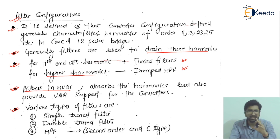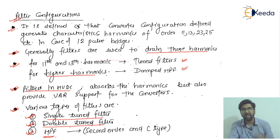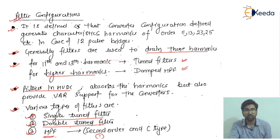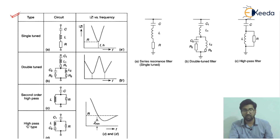There are three types of filters. The first is the single tuned filter. The second is the double tuned filter. The third is the high-pass filter (HPF). Within the high-pass filter category, we have the low-pass, high-pass, and band-pass types, and specifically the second order and C-type high-pass filter configurations.